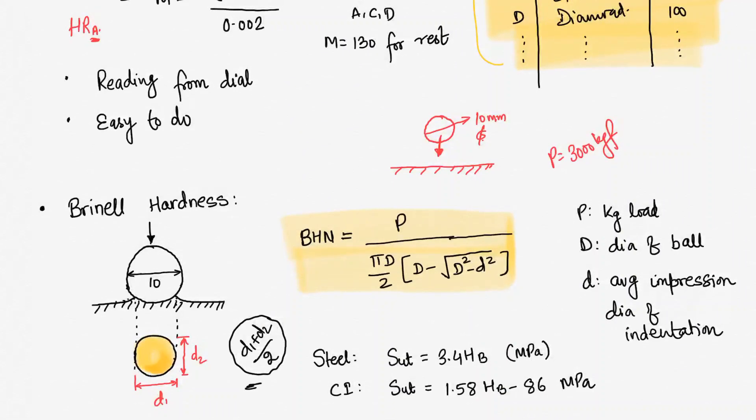For steel, it will follow SUT = 3.4 × HB if I am using the values in megapascal, and for cast iron it will follow 1.58 × HB - 86 MPa. So if we use it in megapascal, we can do the hardness test and directly get the ultimate strength.